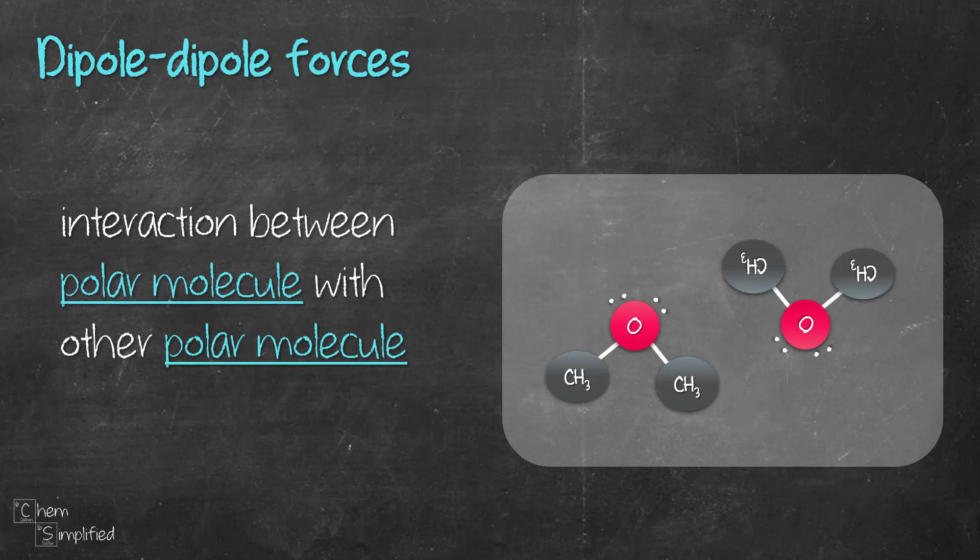That permanent dipole is present because of the electronegativity difference between the atoms. Electronegativity is the capability of an atom to pull the electrons that are present in a bond. Since oxygen has higher electronegativity than carbon, that means oxygen is more capable of pulling the electrons towards it, therefore making it more negative. So it's going to be partially negative. Now carbon on the other hand is less electronegative, so that means more electropositive. So therefore it's going to be slightly more positive. So this dipole that's present is permanent. Unlike the ones that are in London forces that comes and goes, this one is permanent.